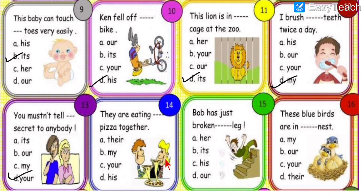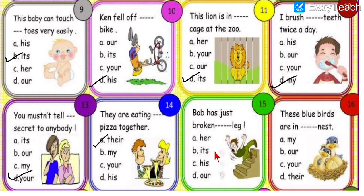Number fourteen: they are eating dash pizza together. Pizza belongs to both of them — 'they' is given. For 'they' we write 'their.' They are eating their pizza together. Number fifteen: Bob has just broken dash leg. Bob's leg is broken. Bob is a boy, so which adjective do we use — her, its, his, or our? We use 'his,' option C. Bob has just broken his leg.